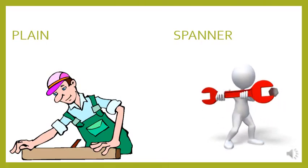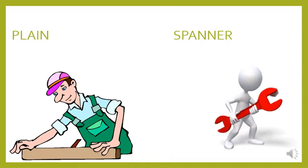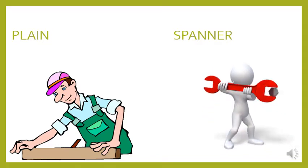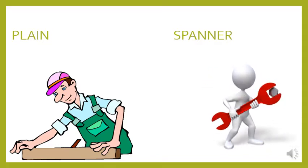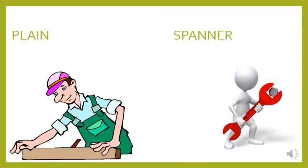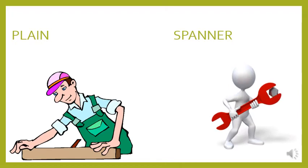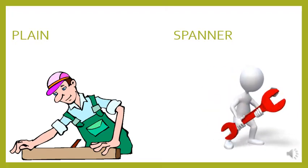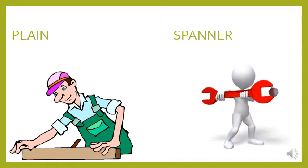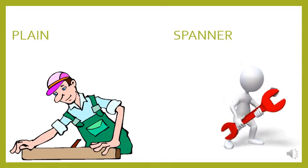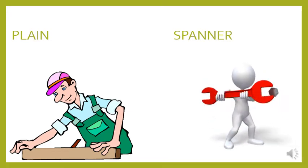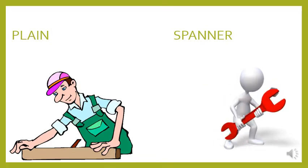Now here you can see the first one is a plane and the next one is a spanner. A plane is used to flatten or reduce the thickness of wood, or it can impart a smooth surface to a rough piece of lumber or timber. The next one is spanner — we use a spanner to fix a screw or it is used in turning rotary fasteners like nuts and bolts.